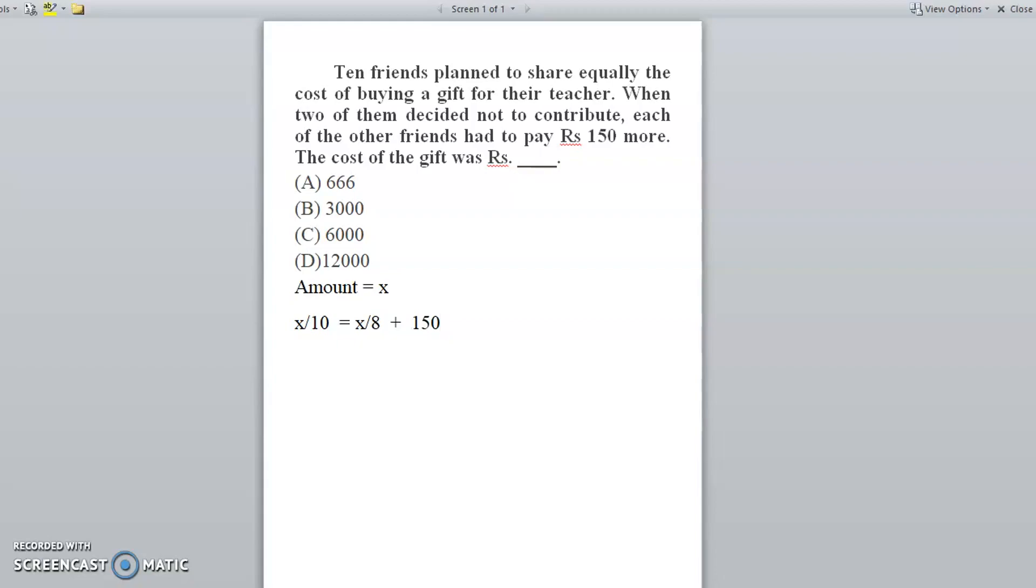Now we can bring the x by 10 and the x by 8 to this side, so it will become x by 10 minus x by 8, which is equal to 150.